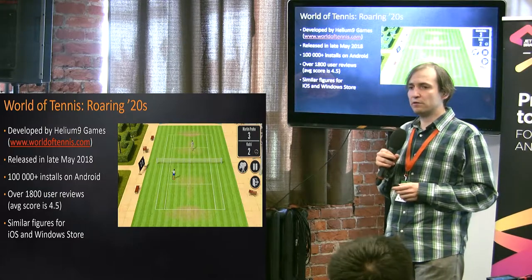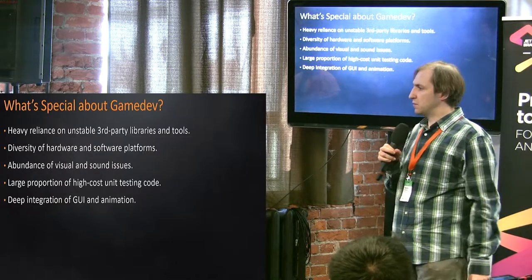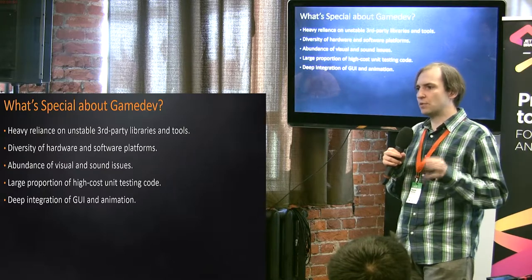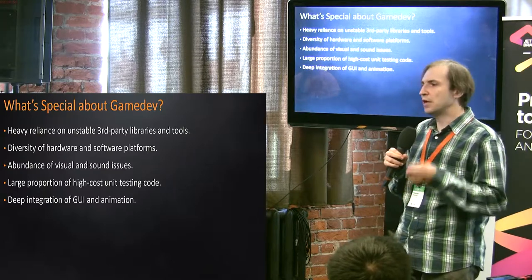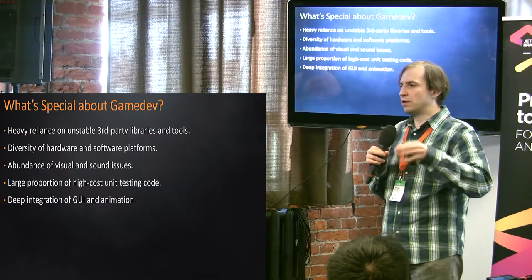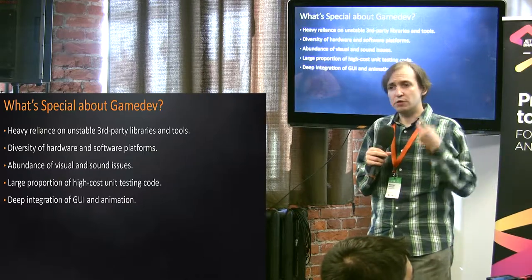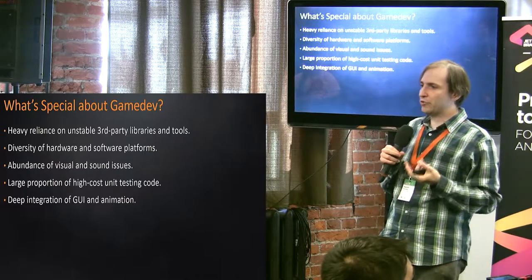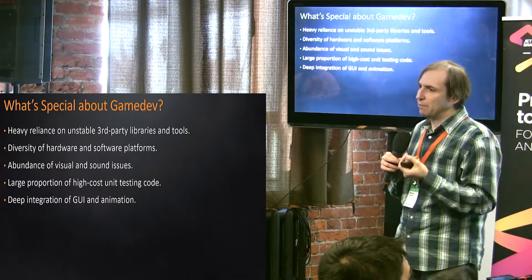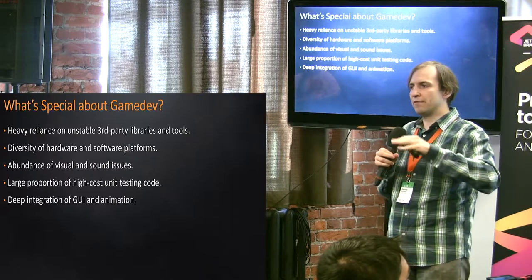Games are a really interesting thing — they are very curious beasts. They are not similar to office applications or many other types of applications. There are some factors that severely affect the way you do QA in a game project. For instance, you very heavily rely not just on third-party libraries, but on libraries that are really just released — they're in a very immature phase.